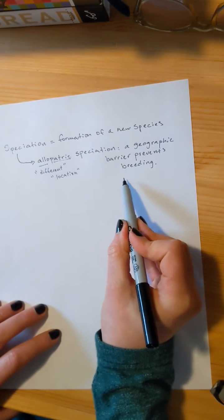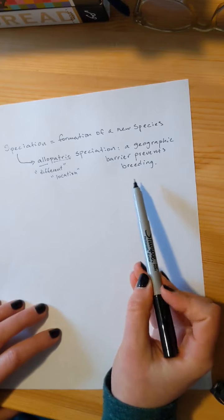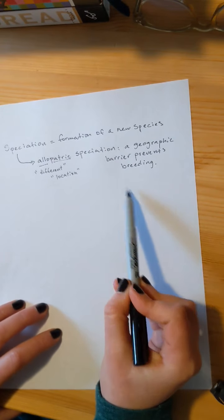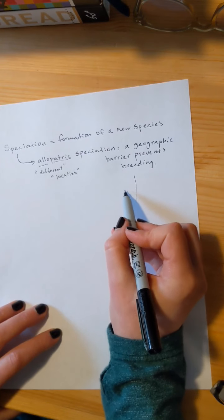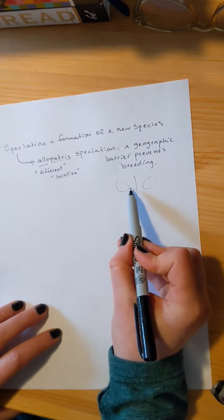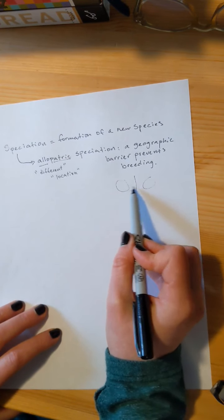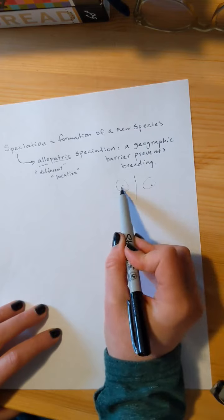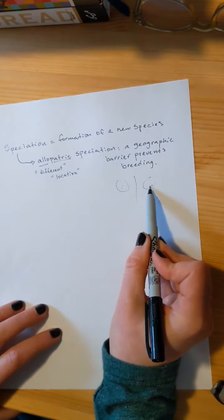In allopatric speciation, there is a geographic barrier between a population that prevents inbreeding. So for example, if I had a population of squirrels living in the forest and a river changed its course and it divided the population right in half, some squirrels would be on this side, some squirrels would be on that side. Squirrels don't swim well, so they can't cross the river. They can no longer breed with the squirrels on the other side of the river. That would be allopatric speciation.